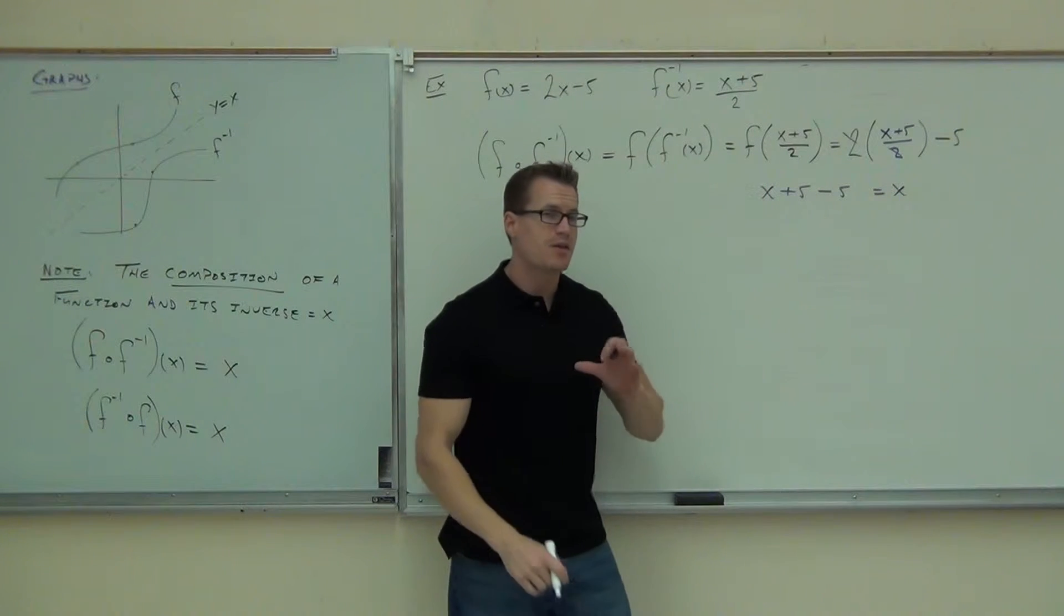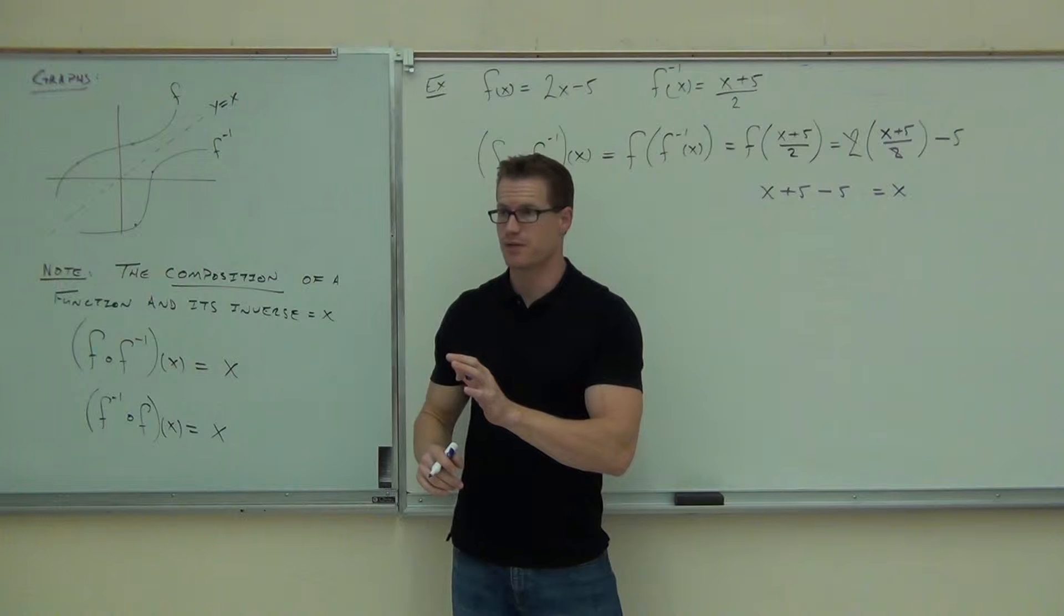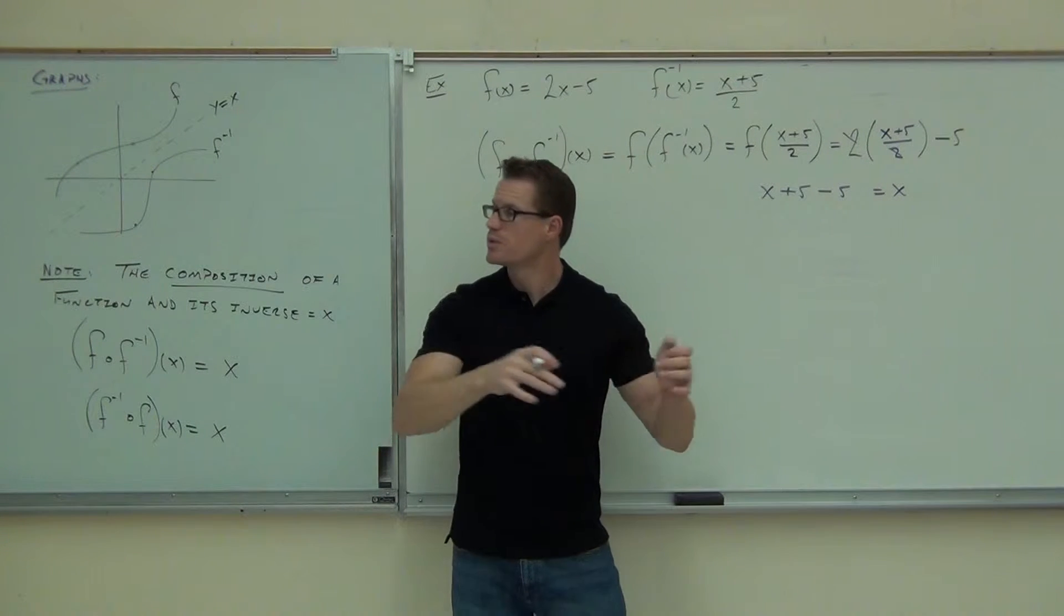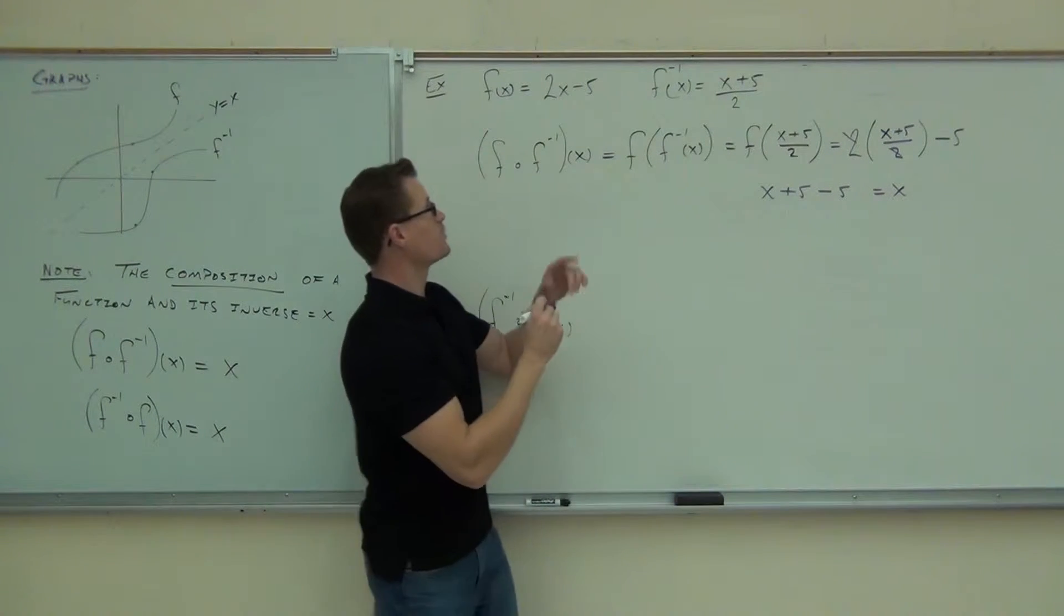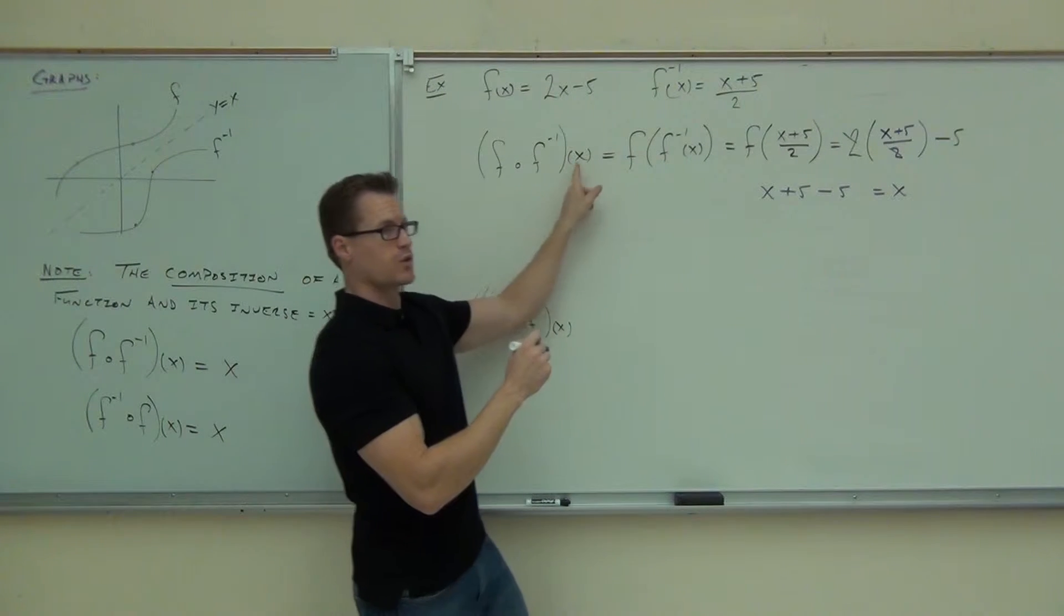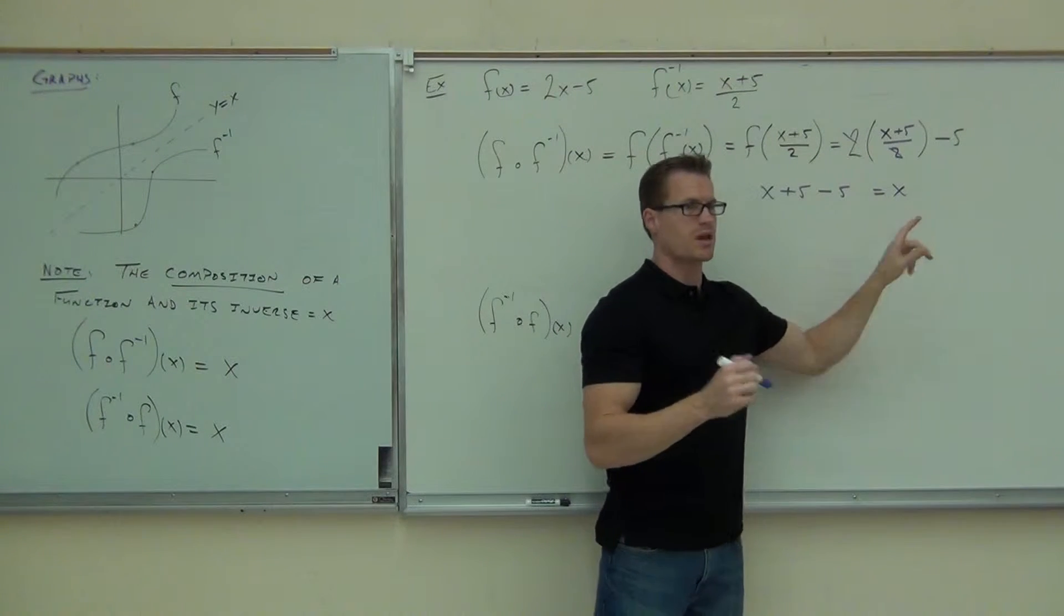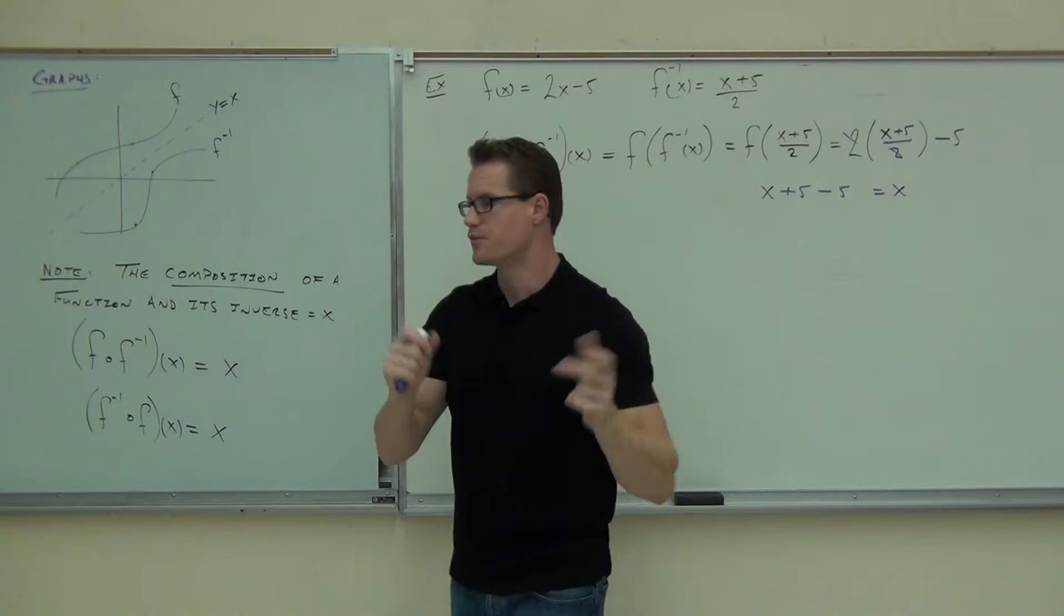If you had gotten anything else besides x, would they have been inverses? That's it. It's undoing what you plugged in. This said, you start by plugging in x, went through both functions and gave you out x. That means the inverse actually undid the function.